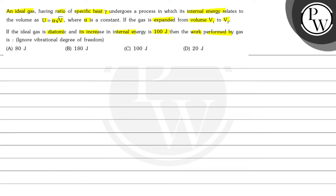We have to find out the work performed by the gas. So first we will write what is given. Given: U equals alpha times the square root of V, and it is an ideal gas. The increase in internal energy is 100 joules, that means delta U equals 100 joules is given.